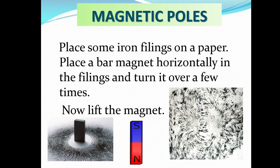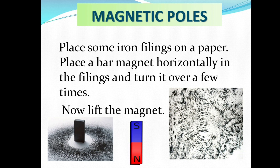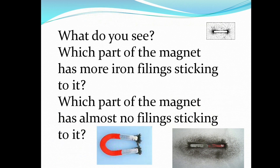Magnetic poles. Place some iron filings on paper. Place the bar magnet horizontally in the filings and turn it over a few times. Now lift the magnet. We are placing small pieces of iron on paper and placing a bar magnet horizontally, turning it over a few times, then lifting it. Which part of the magnet has more iron filings sticking to it? Which part has almost no filings sticking to it?